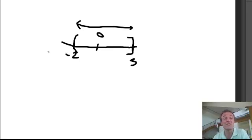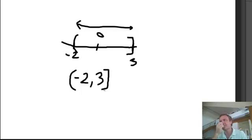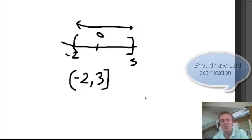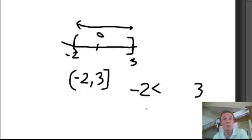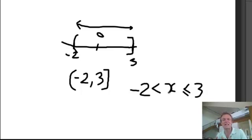Look at the diagram — the interval notation is fairly easy to write: parenthesis, negative 2, comma, going as far as 3, and that one's got the bracket. Now here's the set notation, which some of you will get confused about. Because negative 2 doesn't have the equal sign, it's a parenthesis — no equal sign. The 3's got the bracket, so it has the equal sign. Then we just put an X in the middle. That is the set notation for negative 2 to positive 3.